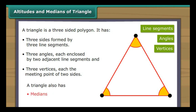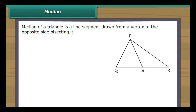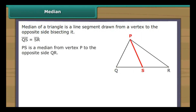A median of a triangle is a line segment drawn from a vertex to the opposite side, bisecting it. In the figure, line segment PS is drawn from vertex P to the opposite side QR. It divides QR into two equal halves. Therefore, PS is a median from vertex P to the opposite side QR.